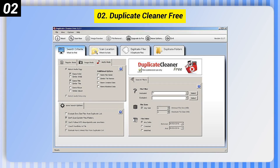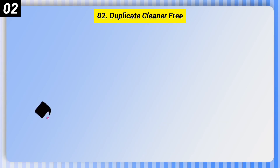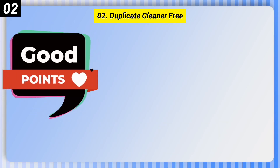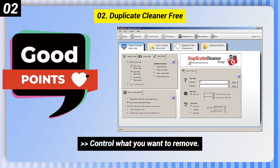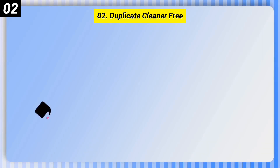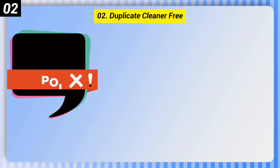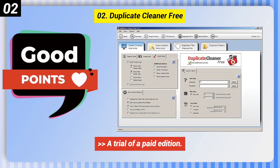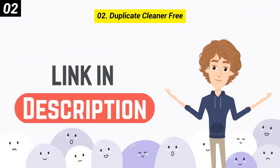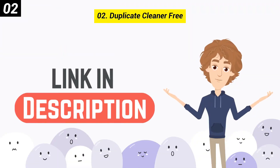Number 2: Duplicate Cleaner Free. Here are some good points: scan multiple file types, tune your file search, control what you want to remove. Bad point: a trial of a paid edition. You can check out the link in the description box.